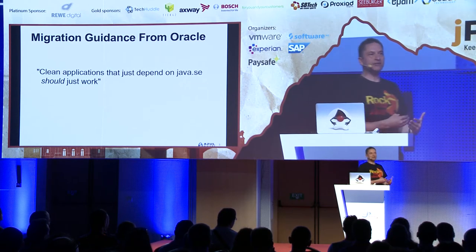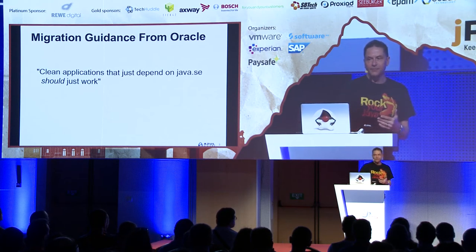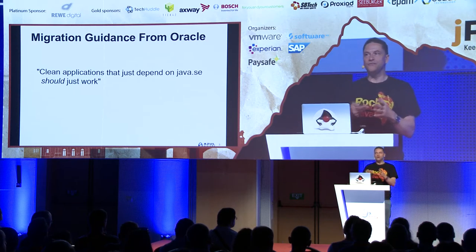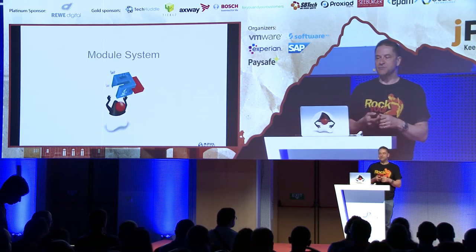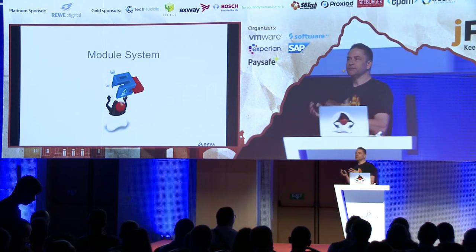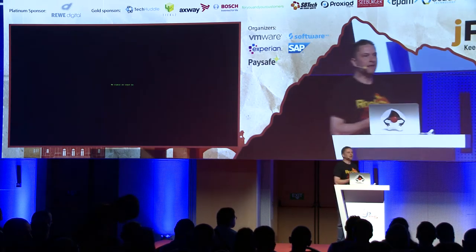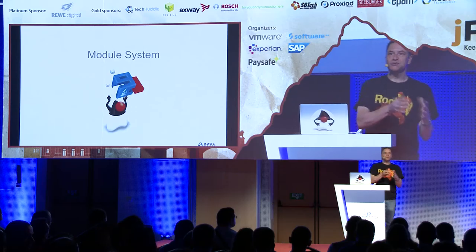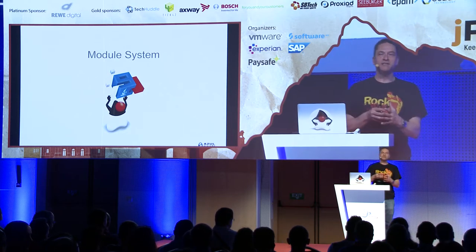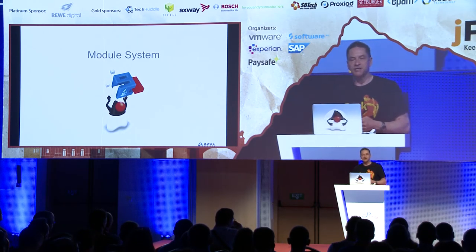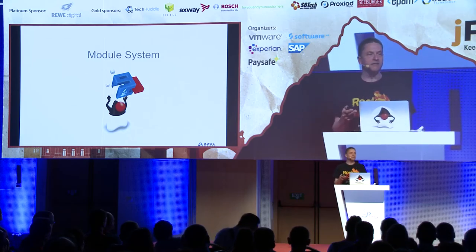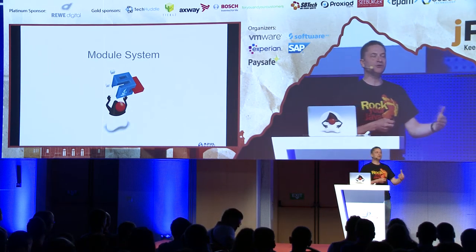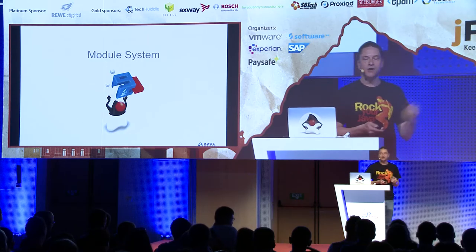The biggest thing in JDK 9 from the point of view of how the JDK is moving forward is the Java Platform Module System. This was the big thing, which took some time to get completed — there were some delays — but they wanted to make sure it was right and affected as few applications, libraries, and frameworks as possible.